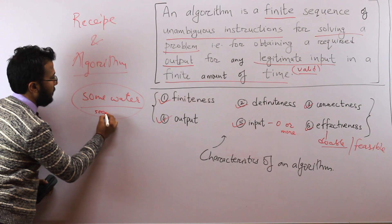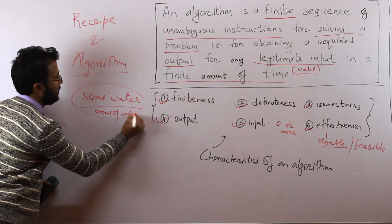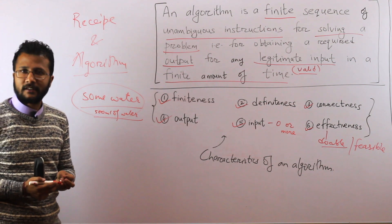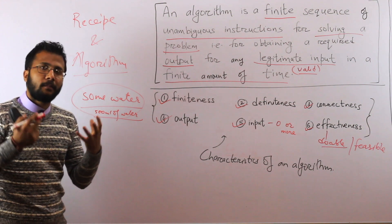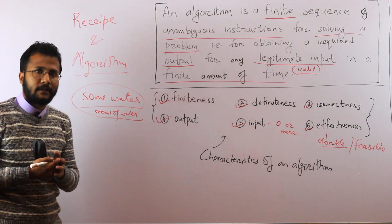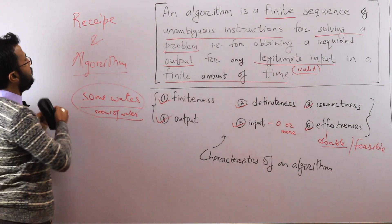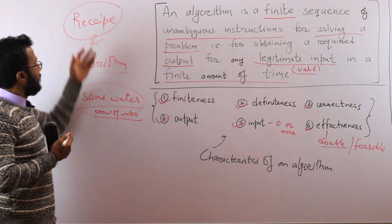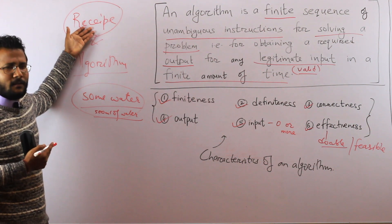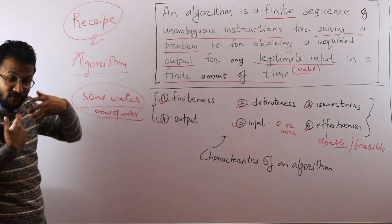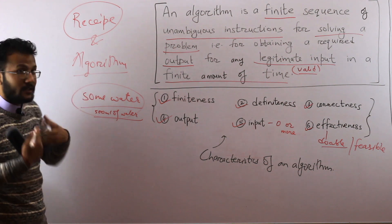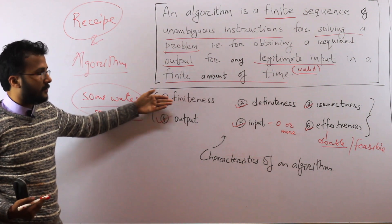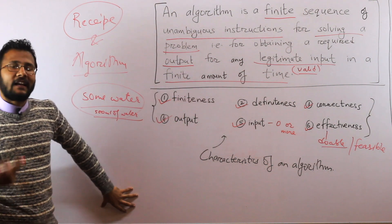Instead of writing 'some water,' you would write 'add 500 milliliters of water' — now it becomes perfectly clear, since 500 milliliters is universally understood. Recipes work well with human beings because we are intelligent enough to interpret vague terms, but machines are not that intelligent. Instructions given to a machine must be clear, precise, correct, and a finite sequence of steps — all algorithm properties must be satisfied.